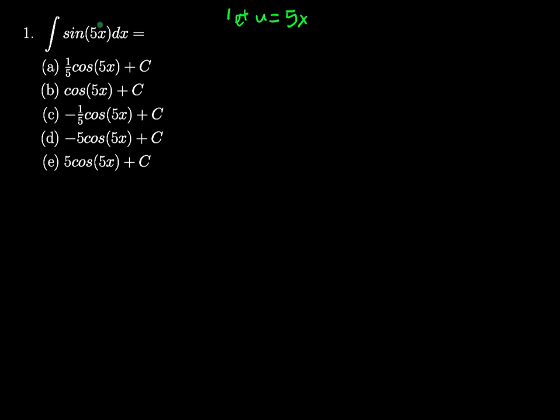Now, if I were to substitute that in, I'd have another problem because I'd have the sine of u, but it would still be in terms of x. So I need to find out what dx is. I can do that quite easily by taking the derivative with respect to x of both sides.